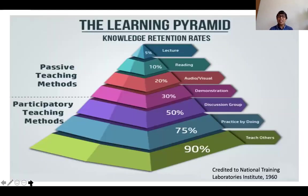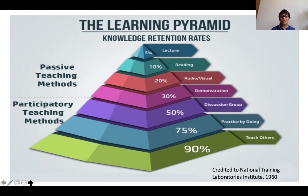In the 1960s, the National Training Laboratories Institute created the learning pyramid. It shows how much people retain when exposed to certain teaching methods. The more participants are actively involved in training or learning, the more they retain. The more passive methods — like lecture or reading — result in less retention. What is particularly useful is teaching others, which leads to the best retention because it presupposes that you have already mastered the basic concepts through practice and doing, and when you master it, you can teach others.